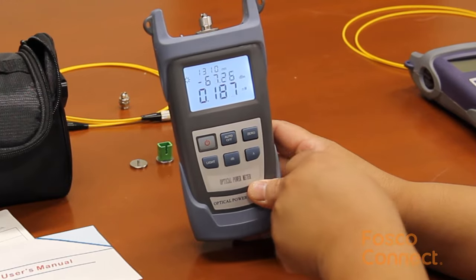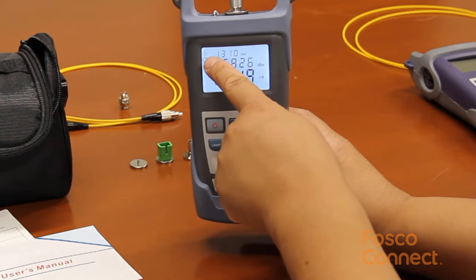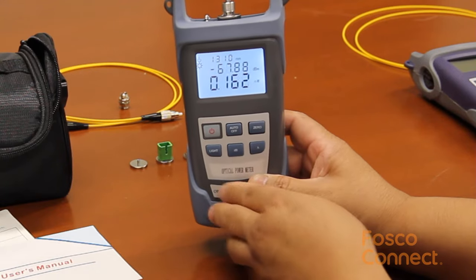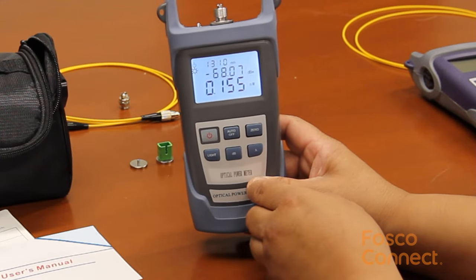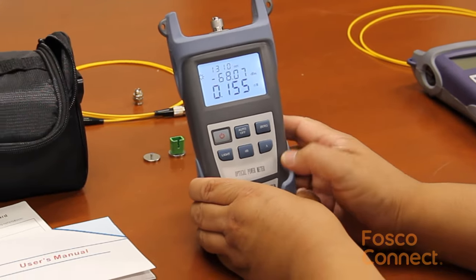It also has an auto shut off feature. We can press the auto off button once to turn on this feature. An auto off symbol is shown on the screen, which means the device will auto shut off after 10 minutes.